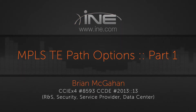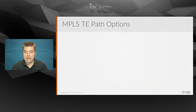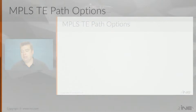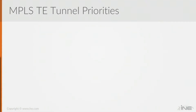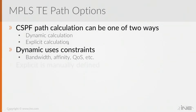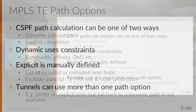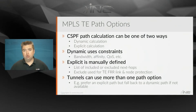In our next section, we're going to look at the other MPLS traffic engineering path options that we can define to control the dynamic path selection from the head end of the tunnel to the tail, in terms of things like the bandwidth, the affinity bits, and other options like QoS. As we saw from previous examples, there are two main ways to do path selection for the tunnel: either dynamically or explicitly.